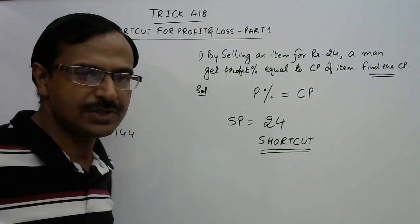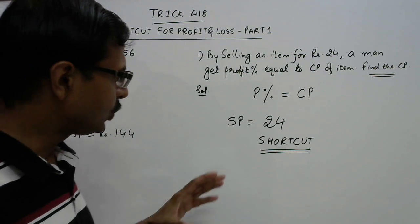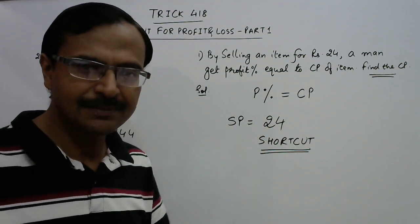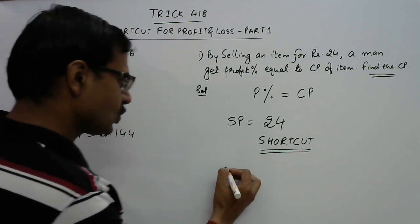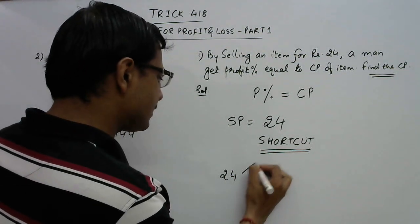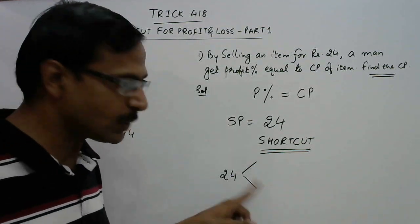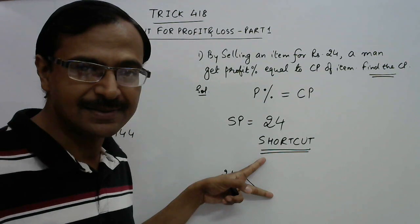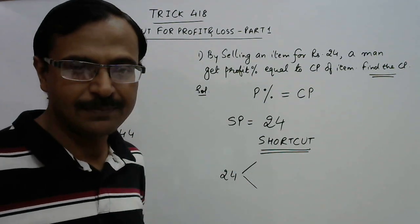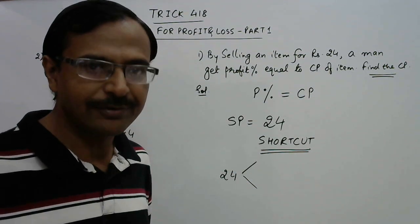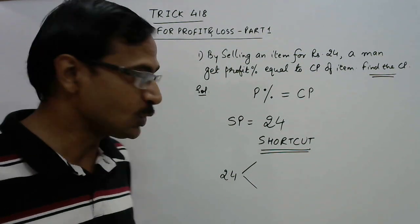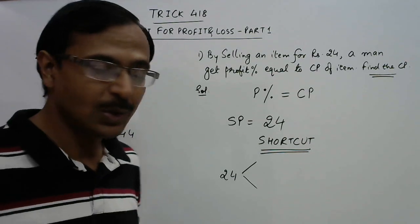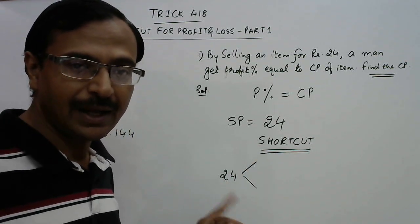For this type of question you just need to split this 24 into two factors, so 24 is to be split into two factors obviously whose product is 24. But how to write those two factors? Those two factors should have a difference of 10.